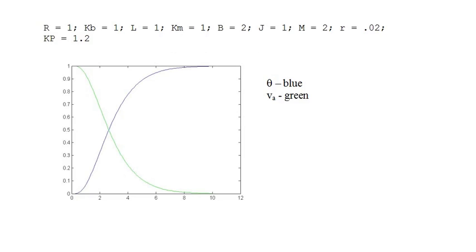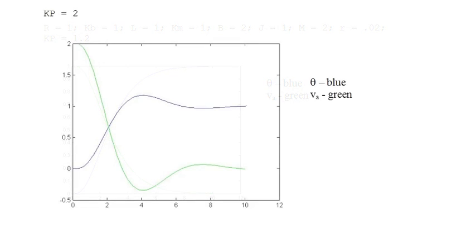The graph shows the results using a commanded theta of 1 and proportional constant Kp equals 1.2. The blue graph is theta and the green graph is the commanded voltage. Increasing the proportional constant to 2 increases the speed of the system, but it introduces oscillation.